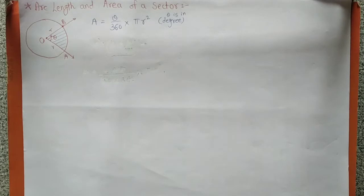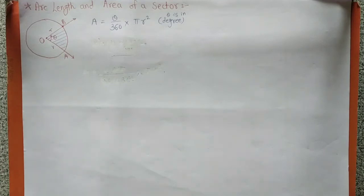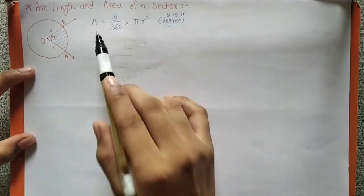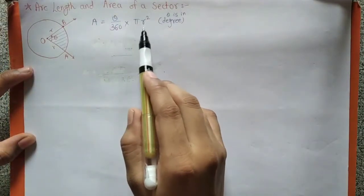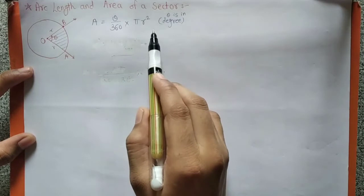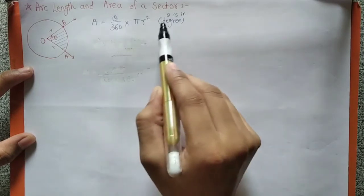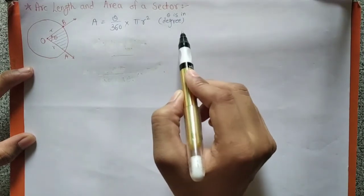Hi friends, in this video we will learn arc length and area of a sector. You might think that we already done arc length and area of sector, but that formula — area of sector equal to theta by 360 into pi r square — in that case, theta is in degree measure.